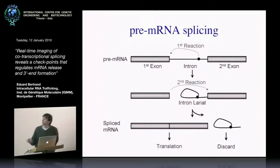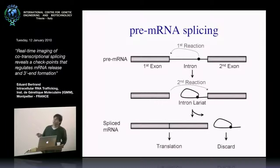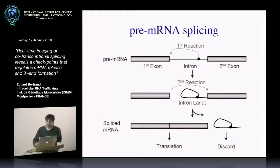What I want to discuss is about splicing. The splicing reaction is a two-step chemical reaction. In the first step, the branch point of the intron attacks the 5-prime splice site to give the free exon 1 and the lariat, and then the first exon attacks the splice acceptor junction to get the spliced RNA on one side and the intron on the other side.